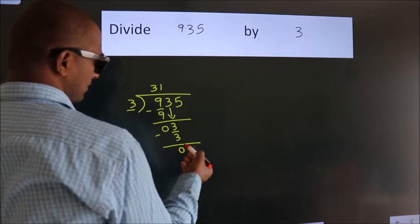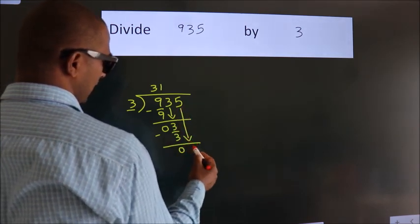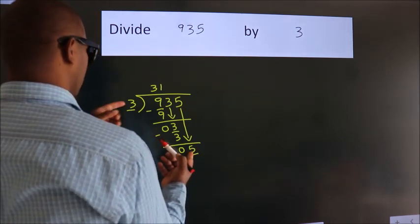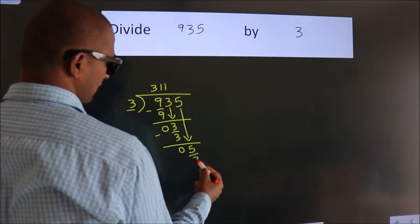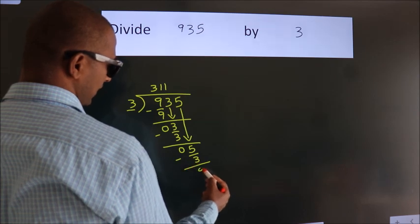After this, bring down the beside number, so 5 down. A number close to 5 in 3 table is 3 times 1 is 3. Now we subtract, we get 2.